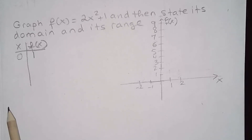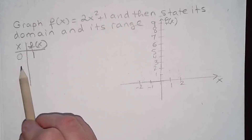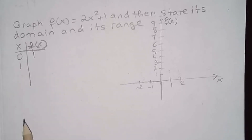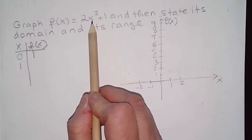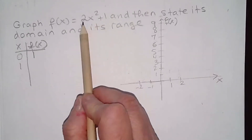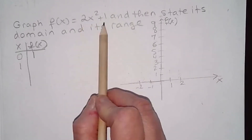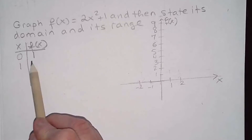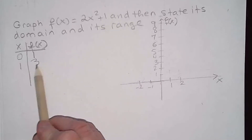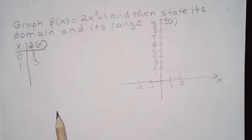We can select other values of x. If we select x equal to one: one squared gives me one, one times two is two, two plus one is three. So one, three is a point on the graph.